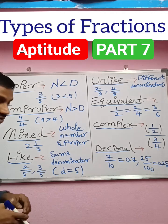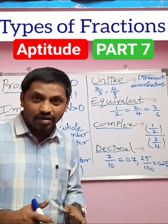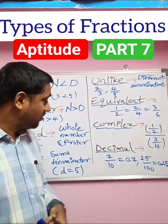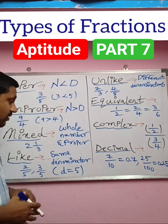Next, mixed fraction: a combination of whole number and proper fraction, then it is said to be mixed fraction. For example, 2 and 1 by 3.